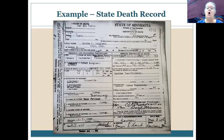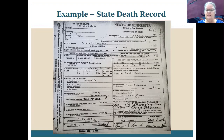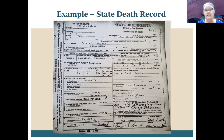Other information on a death certificate — birth date, age, parents' names — is only as accurate as the informant. I was the informant when both my parents died, and by the time I was giving that information to the mortuary I was sleep-deprived and not on top of my game. So if we find incorrect information on a death certificate, remember it's only as accurate as the informant who has just lost someone very close to them.